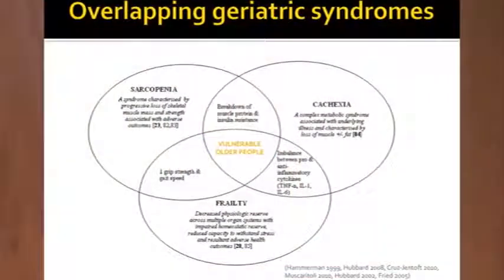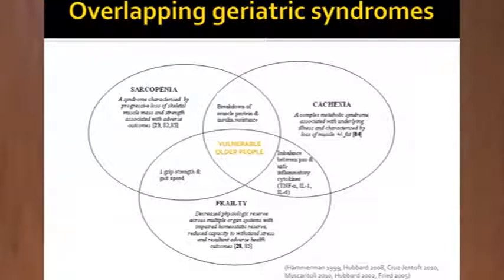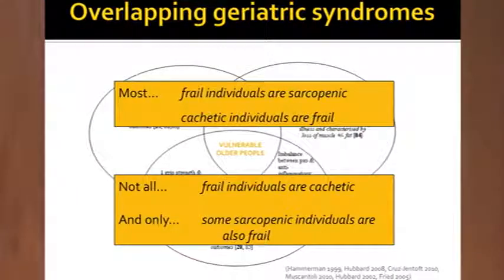It's always worth remembering those overlapping geriatric syndromes. We commonly see sarcopenia and cachexia as patients age, and there's quite a lot of overlap in both the etiology - with imbalances in pro- and anti-inflammatory cytokines thought to be causative - and in the phenotype expressed, such as problems with grip strength, gait speed, and skeletal muscle function. However, these remain discrete clinical entities: most frail people are sarcopenic, but not all frail individuals are cachectic, and only some sarcopenic patients are also frail.